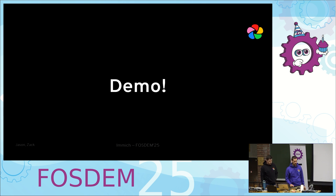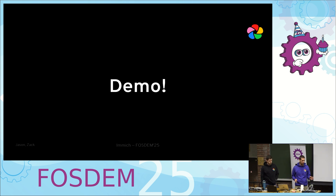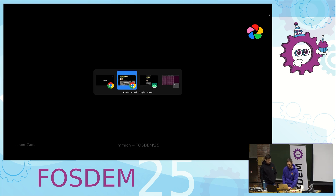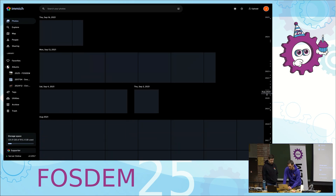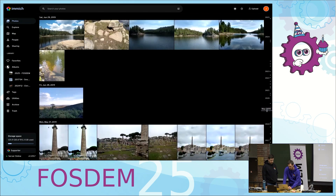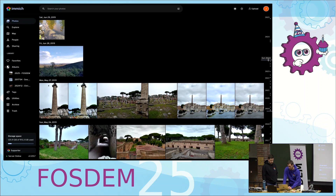We're going to do a live demo. I'm going to show you some pictures — I'm from the United States and I flew into Germany and spent a few days there before coming up to Brussels. We're going to look at pictures I have set up on a demo instance and look at some of the features and capabilities. You'll notice the first thing: there's this scrubber timeline, so you can just click and jump to any point in time, making it really nice to go back and find pictures.